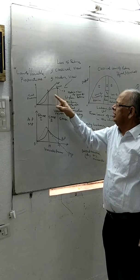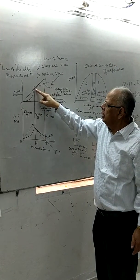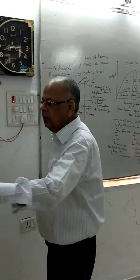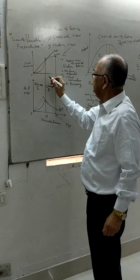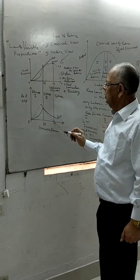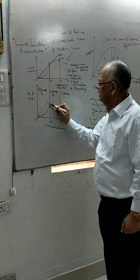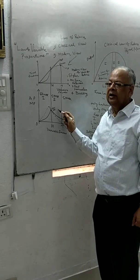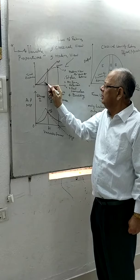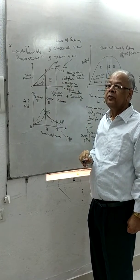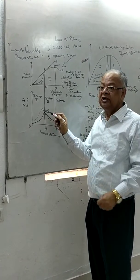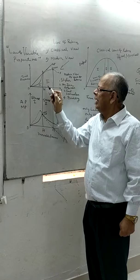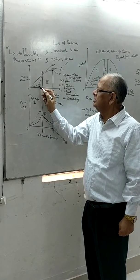From point F we draw a perpendicular to the next attached diagram, which corresponds to point H. This marks the maximum of average production. Average production maximization is most important in microeconomics because it is the dividing line between the first stage and the second stage — that is, between increasing returns and diminishing returns.